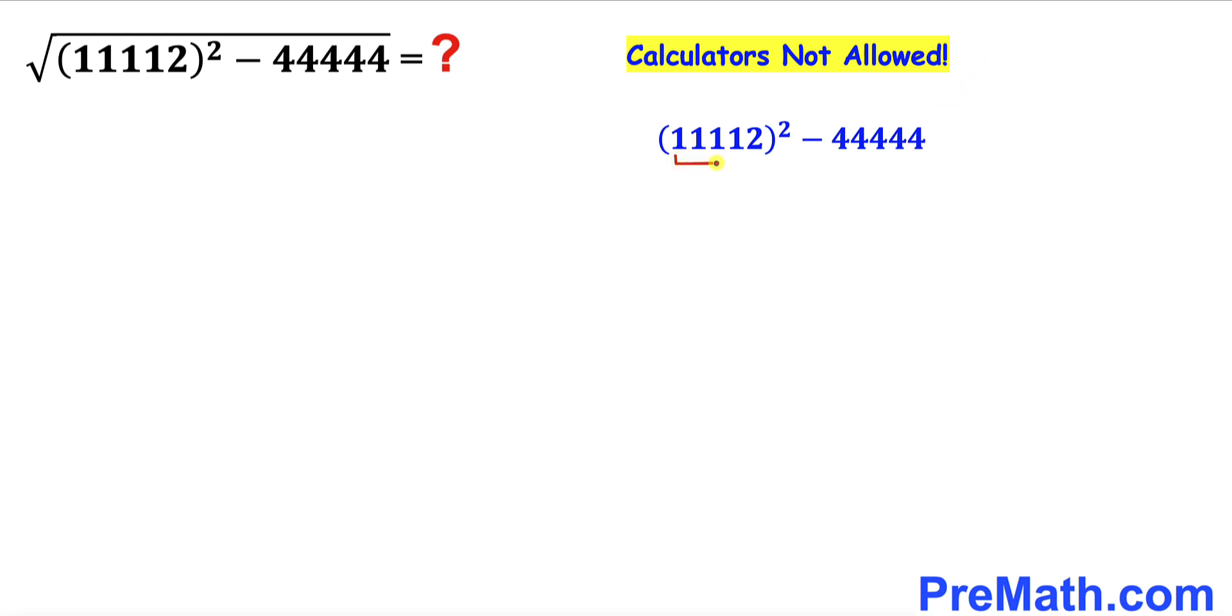Now we are going to manipulate this part. 11112 could be written as 11111 plus 1, and likewise let's go ahead and tweak this 44444. This could be written as, if I factor out 4, this is going to become 4 times 11111.